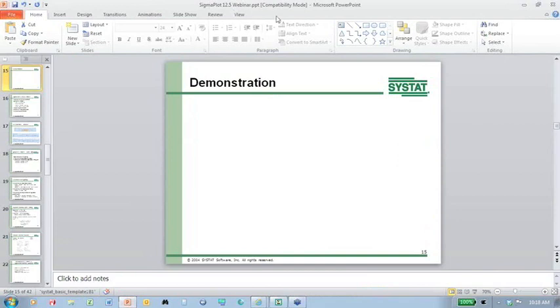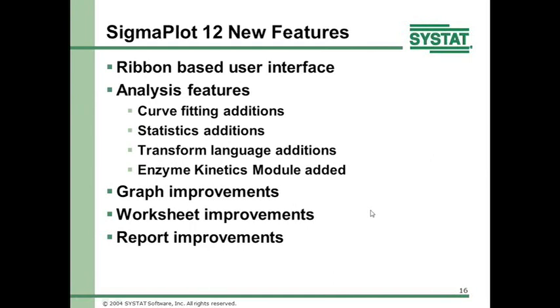Now let's go over what was added in version 12 — for those attending who are using previous versions. SignalPlot 12 features a ribbon-based user interface, analysis feature additions to curve fitting, statistics, and transform language, and the entire enzyme kinetics module — which was previously sold separately — is now part of SignalPlot 12. There are also graph, worksheet, and report improvements.